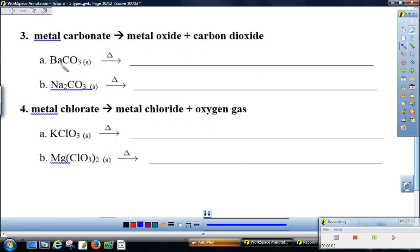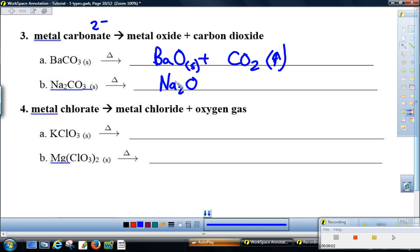A metal carbonate—a metal linked with a carbonate ion, which is a minus two ion—splits apart into the metal oxide and gives off CO2 gas. Barium is plus two, oxide is minus two, so BaCO3 becomes BaO and CO2. This is a salt. Salts form crystal lattices, so they are solids at room temperature. Sodium carbonate: two sodiums for the oxygen to make that neutral. It's a salt, solid at room temperature, and produces CO2 gas.